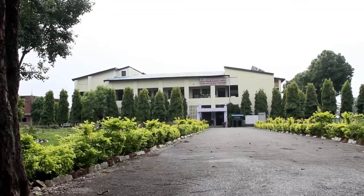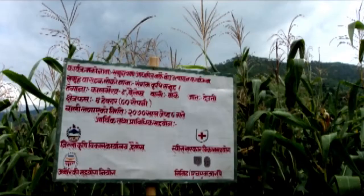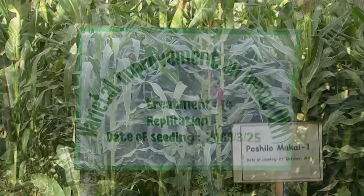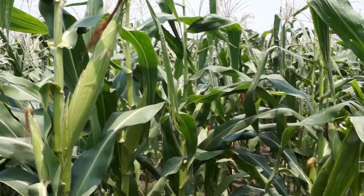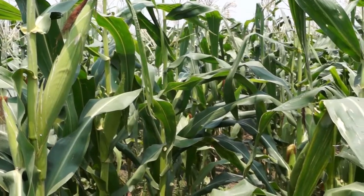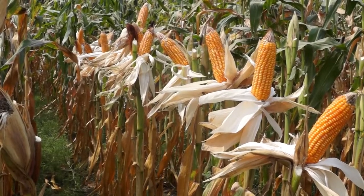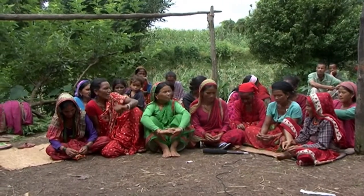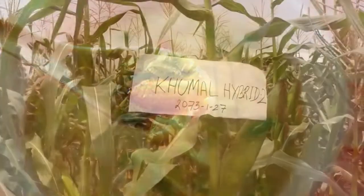The National Maize Research Program in collaboration with CIMMYT and other stakeholders has developed a qualitative variety of maize called Poshilo Makai, that contains tryptophan and lysine — essential amino acids crucial for infants and pregnant women. In addition, NMRP has developed various programs on community-based production of maize seed, popcorn, baby corn and hybrid maize.